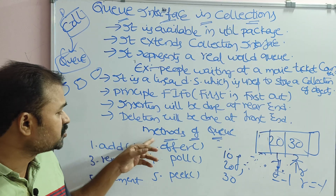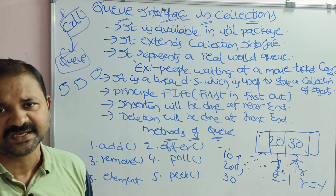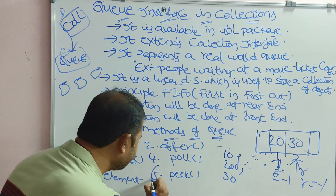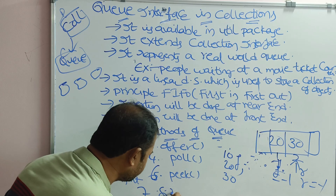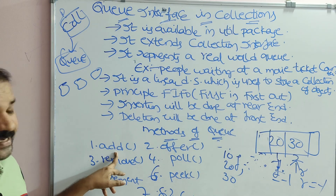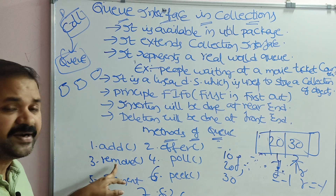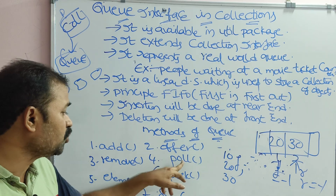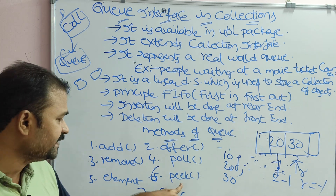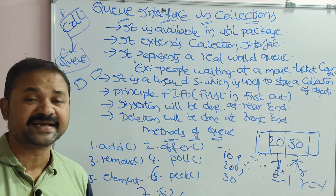Now let us see the methods of the Queue interface. There are plenty of methods, but these seven are the important ones: add, offer, remove, poll, element, peek, and size.